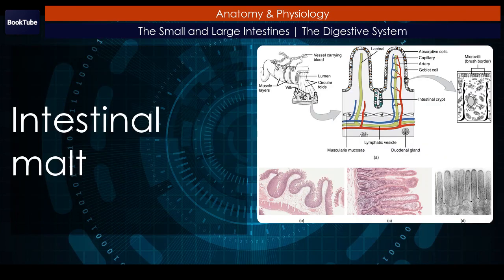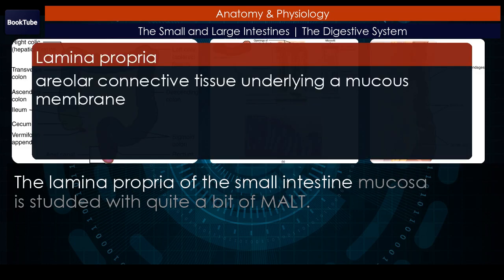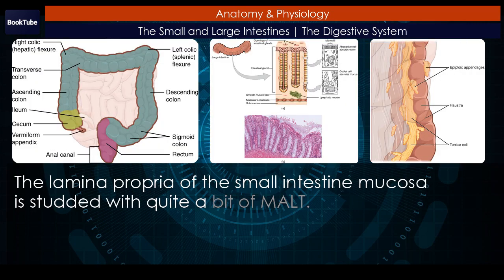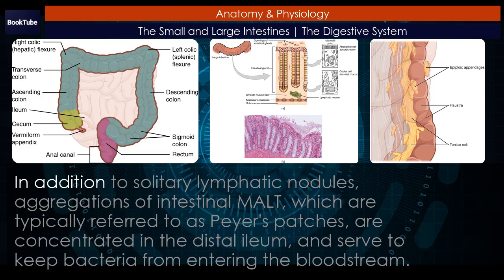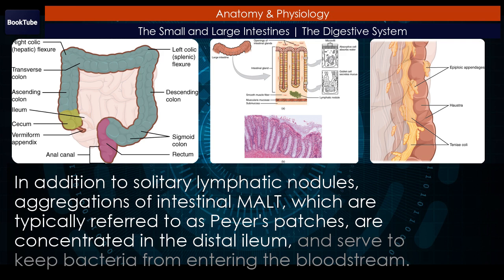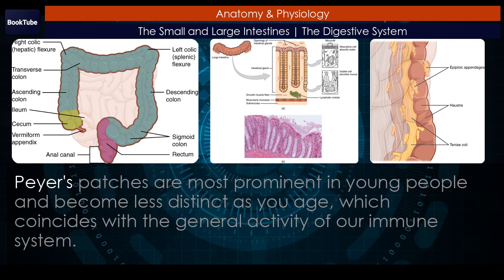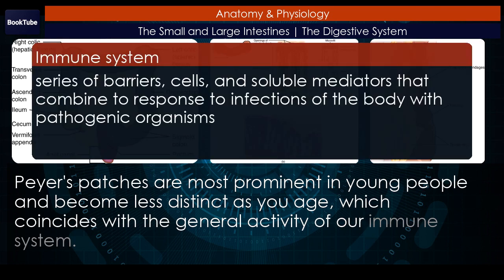Intestinal MALT. The lamina propria of the small intestine mucosa is studded with quite a bit of MALT, in addition to solitary lymphatic nodules. Aggregations of intestinal MALT, typically referred to as Peyer's patches, are concentrated in the distal ileum and serve to keep bacteria from entering the bloodstream. Peyer's patches are most prominent in young people and become less distinct as you age, which coincides with the general activity of our immune system.